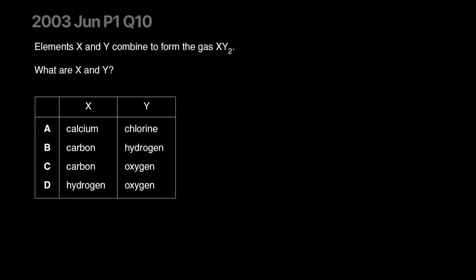Elements X and Y combine to form gas XY2. What are X and Y? How is it not carbon and oxygen, I don't know. They're talking about a gas. Calcium will also form CaCl2, very similar to XY, but it's an ionic compound, not a gas. So you have a gas, pretty obvious what that is. Answer is C.